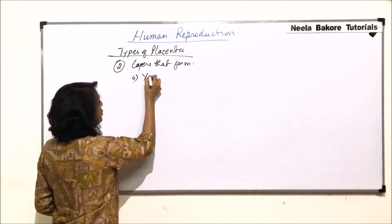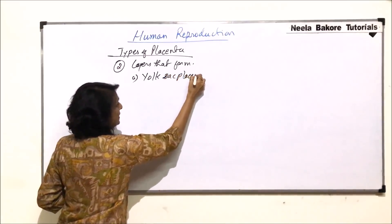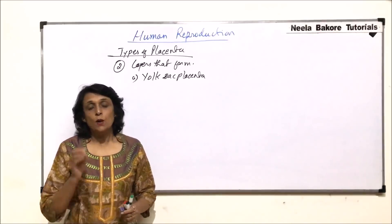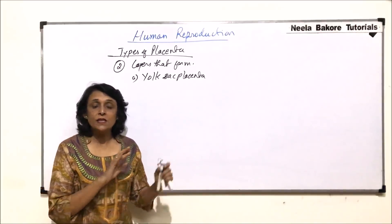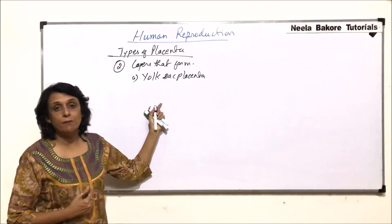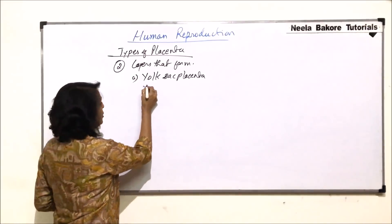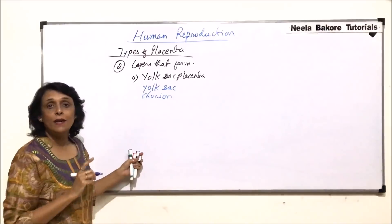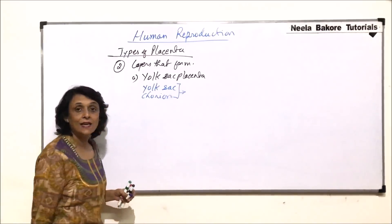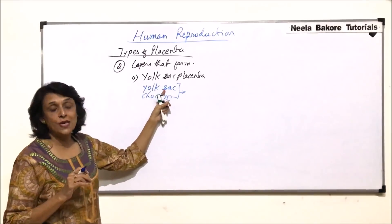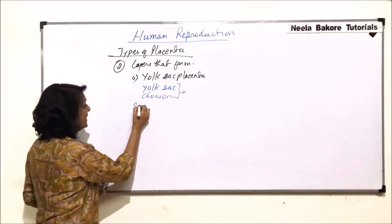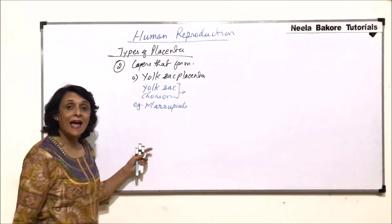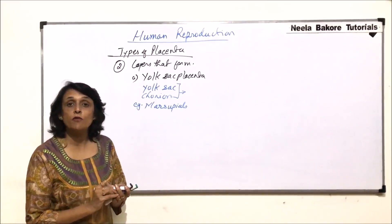The first type is known as yolk sac placenta. There are four extra embryonic membranes: amnion, chorion, allantois, and yolk sac. The placenta formed from yolk sac and chorion — these two membranes together — is the yolk sac placenta. This is seen in marsupials, like kangaroos.